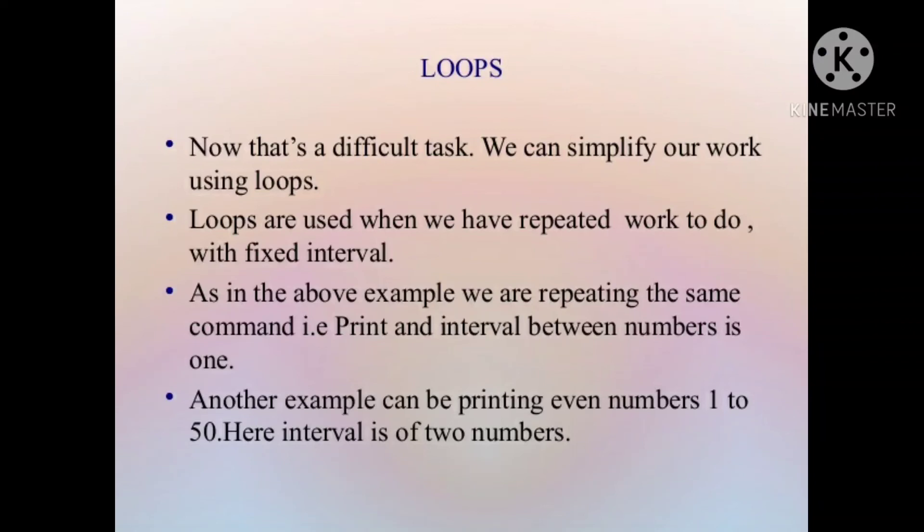And second condition ho tate hai. Until a certain condition is met. Ki agar hum ne koji condition dhi hai. Toh us condition ko satisfy karne tuk, fulfill karne tuk loop repeat ho tate hai. Toh uske liye hum kaun sa loop use kar tate hai? Do loop. Toh is tariqe se, is chapter mein hum do types ki loops padehengi. For next loop and second is do loop.